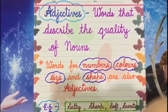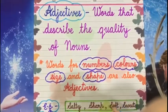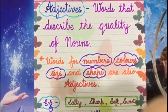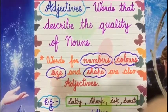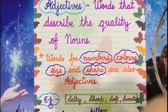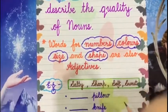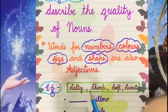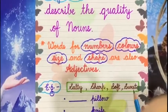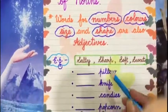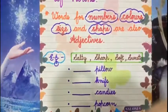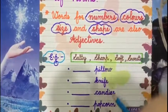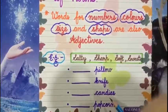So adjectives are words that describe the nouns. Let us understand it with the help of a few more examples. This is the hint box and we have put some adjectives in it. These are the nouns, and we will try to find the suitable adjective for each noun.